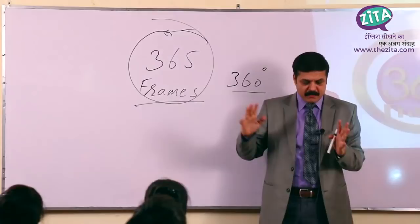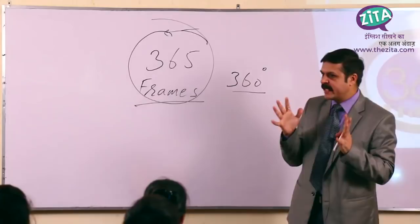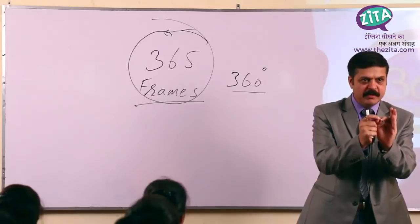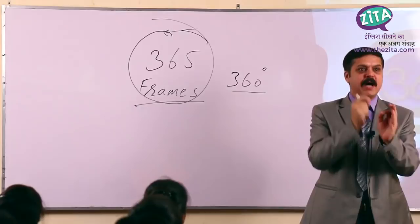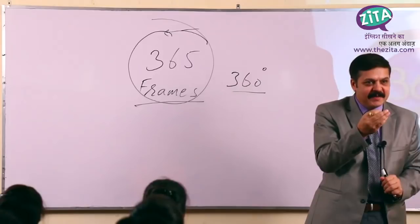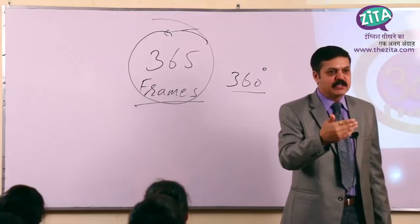तो हम आपको words जो बताएंगे, वो एक different तरीके से। जहाँ पर आप words को कैसे देखेंगे? Picture से। आपके सामने कोई तज़्वीर आएगी, आपके दिमाग में एक word आएगा। और वो जो word होगा, वो एक सिर्फ spark होगा — it will trigger a spark. The frame will be there to trigger the spark, and when the spark comes, not one word will come — a train of words will come. कि मुझे ज़रा से कहीं कोई picture दिखे, और मेरे सामने 10, 15, 20 words हाजिर हो जाएं।